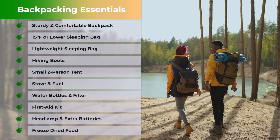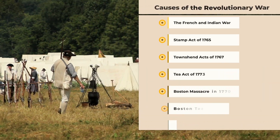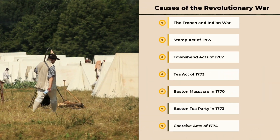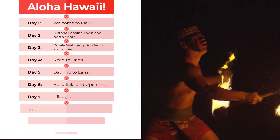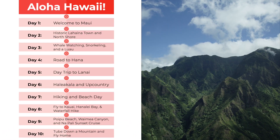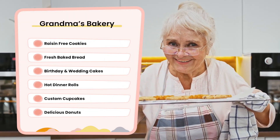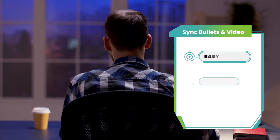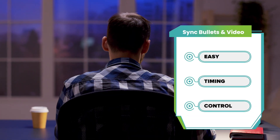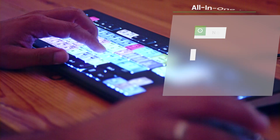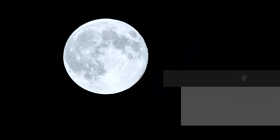Creating bullet points by hand takes forever and is a pain to control bullet timing, but not with BulletPop. BulletPop is a Final Cut Pro plugin with bulletproof lists. There are modular templates for easy timing control and all-in-one templates for faster-than-a-speeding bullet point lists.